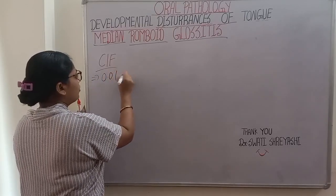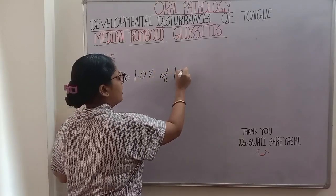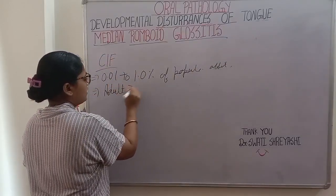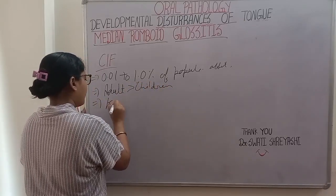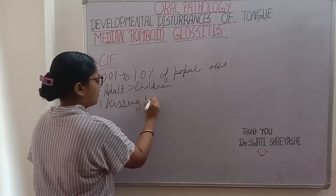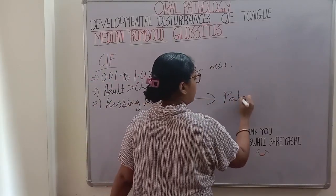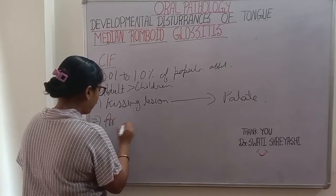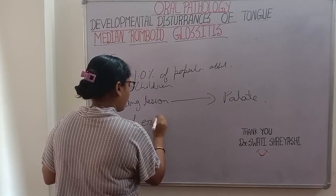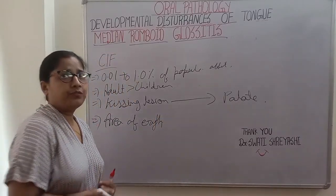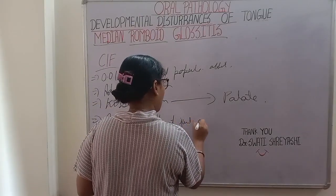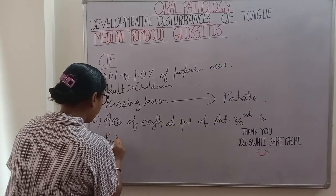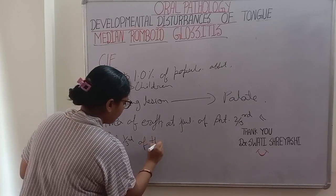In clinical features: 0.01 to 1.0% of the population is affected, more in adults than children. It may be found on the palate as well. There is a smooth, well-demarcated area of erythema at the junction of the anterior two-thirds and posterior one-third of the tongue.